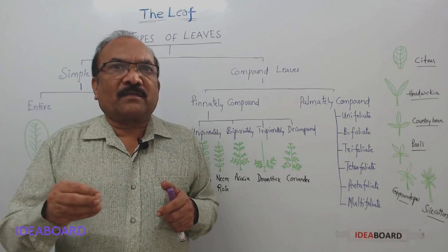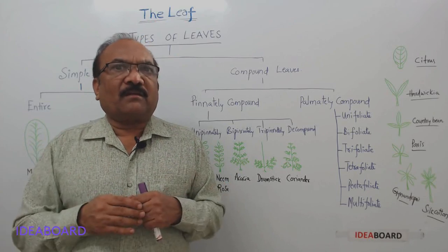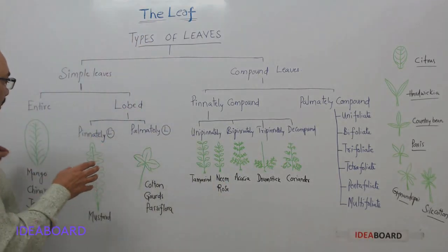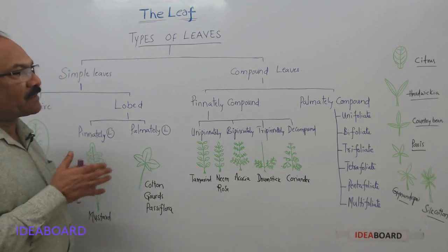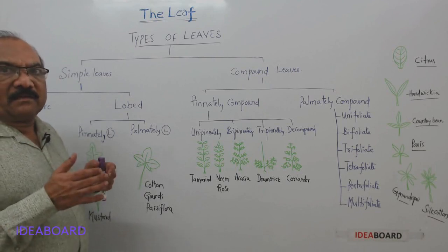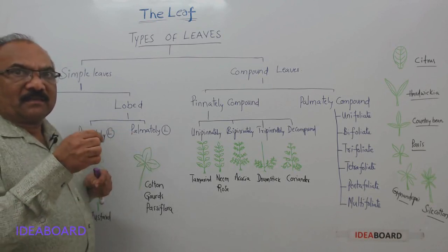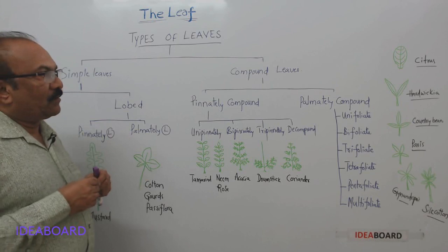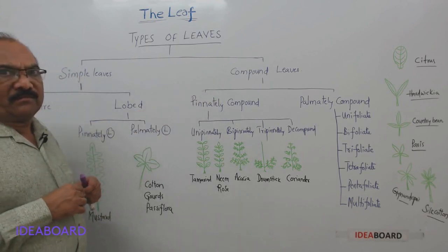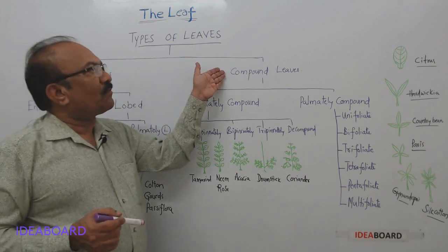If the leaf is not incised at all, or if it is dissected but the dissection does not reach the midrib, such leaves are called simple leaves. If the lamina is dissected into fragments where each fragment resembles a leaf — these fragments are called leaflets — such leaves are called compound leaves.